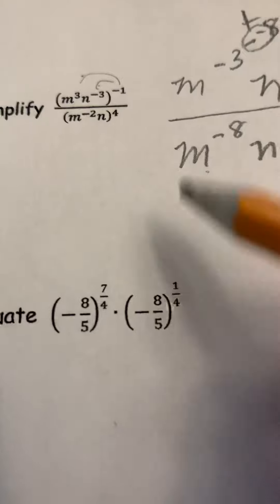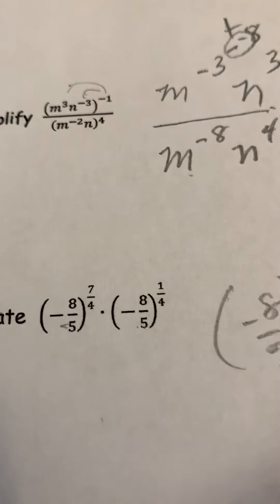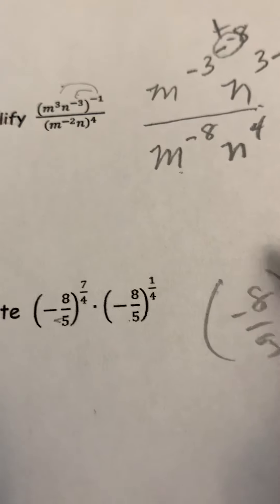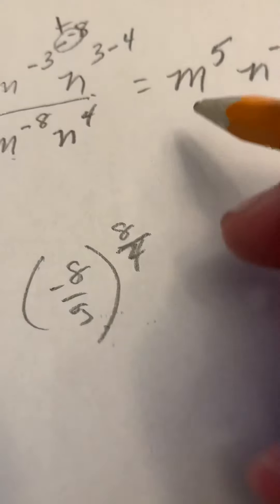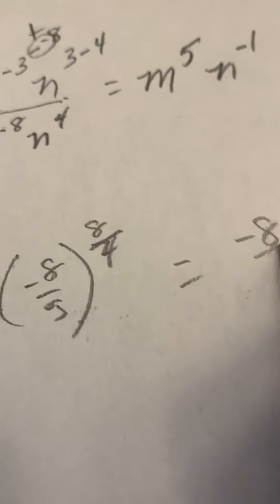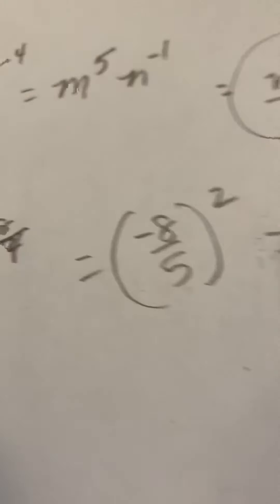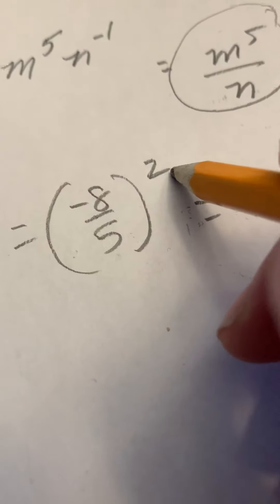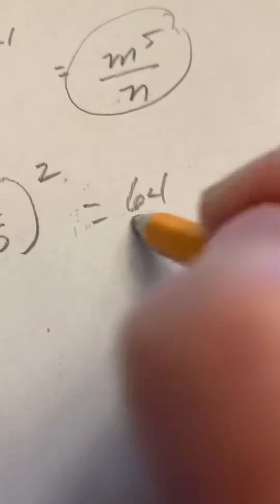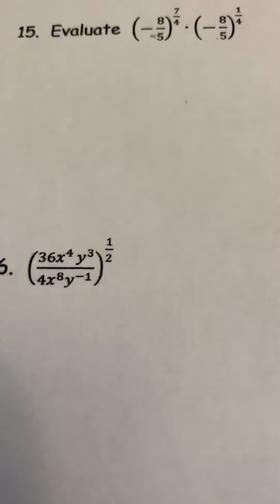When multiplying we add the exponents and don't touch the base. Seven quarters plus 1 quarter is 8 quarters, and the fraction line means divide, so we end up with negative 8 fifths, then squared. With a negative base raised to an even exponent, we end up with 64 over 25.